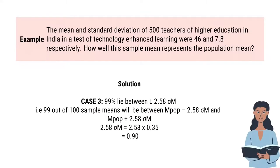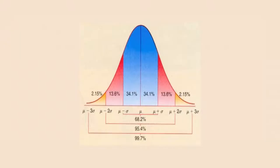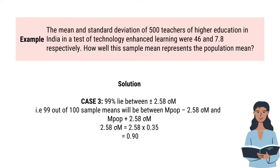Now let us consider the 99% level of confidence. That is, 99% of cases lie between plus minus 2.58 sigma m. We obtain plus minus 2.58 sigma m from our statistical table. That is, 99 out of 100 sample means will be between population mean minus 2.58 sigma m and population mean plus 2.58 sigma m. Let us calculate: 2.58 into 0.35 equals 0.90.